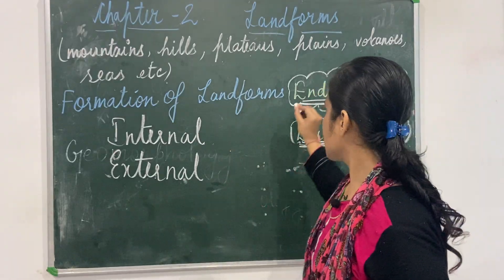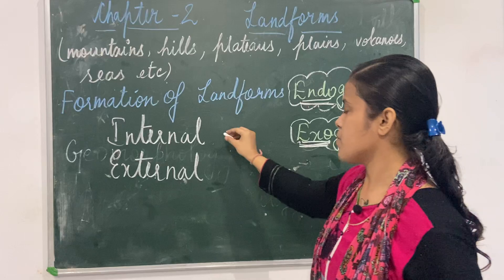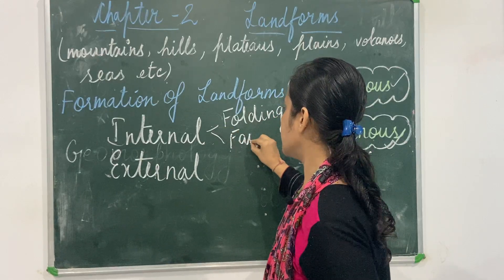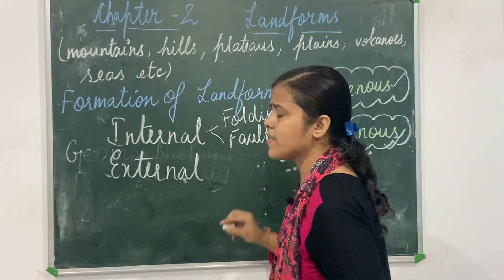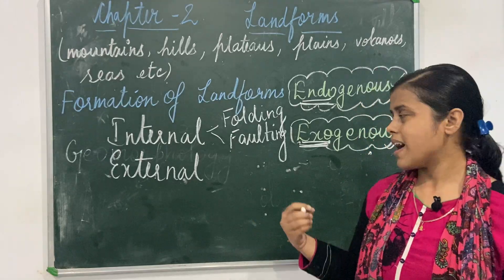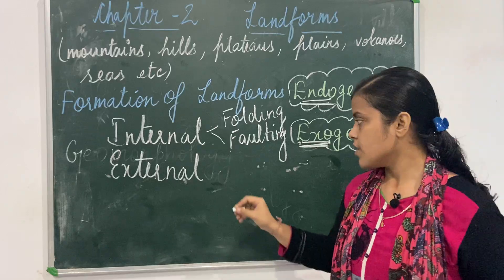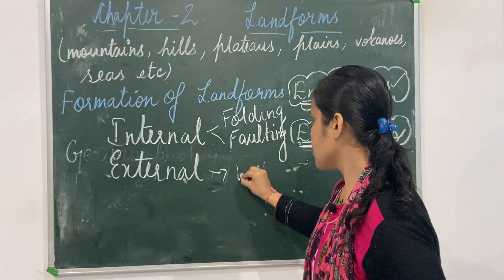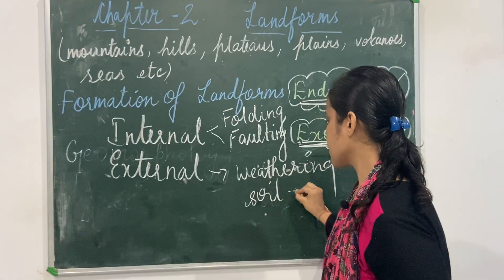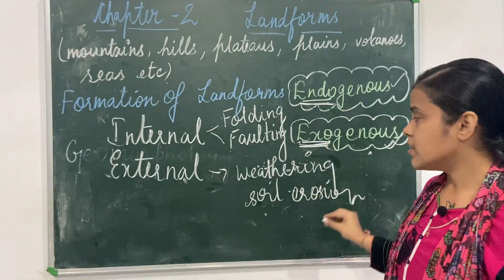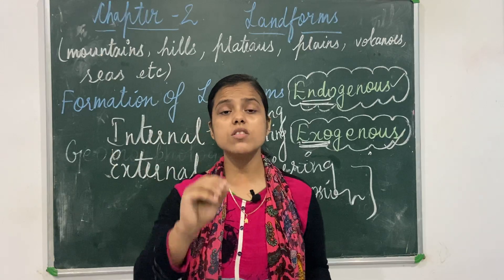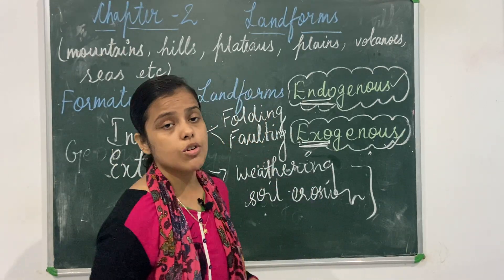Internal forces, through which the endogenous process takes place, include folding and faulting — that means movement. For example, movement of tectonic plates which causes volcanoes and earthquakes and so on. External forces include weathering and soil erosion, which take place due to the agents of denudation.